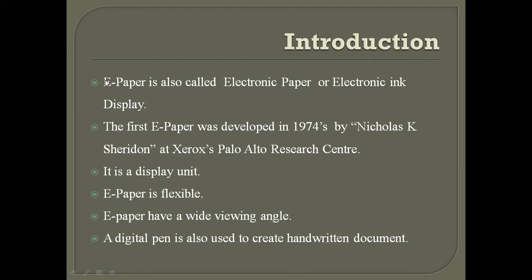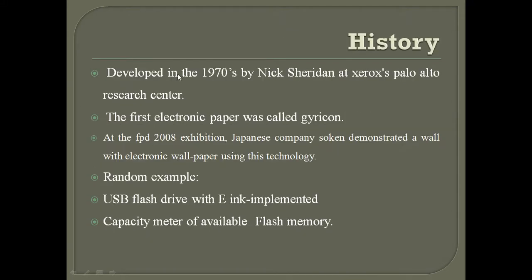E stands for electronic, also known as electronic ink display. The first e-paper was developed in 1974 by Nicholas K. Sheridan at Xerox Research Center. E-paper is flexible, has a wide viewing angle, and a digital pen can be used to create handwritten documents.